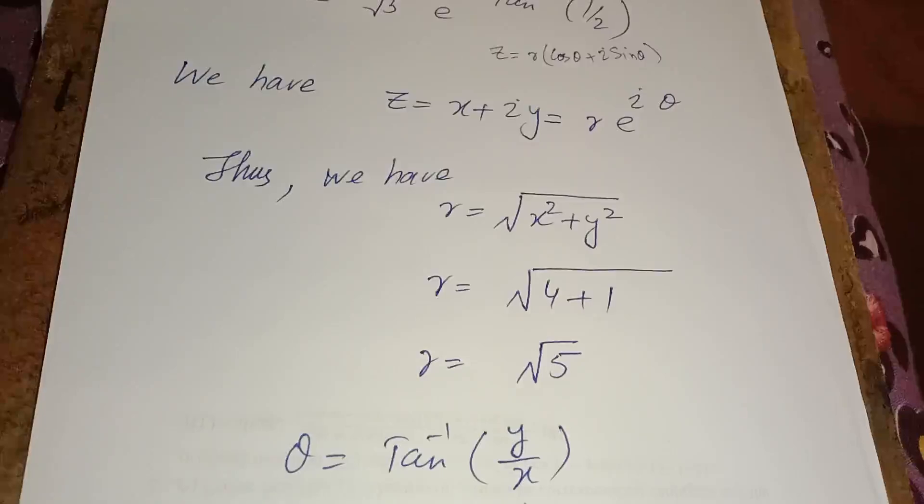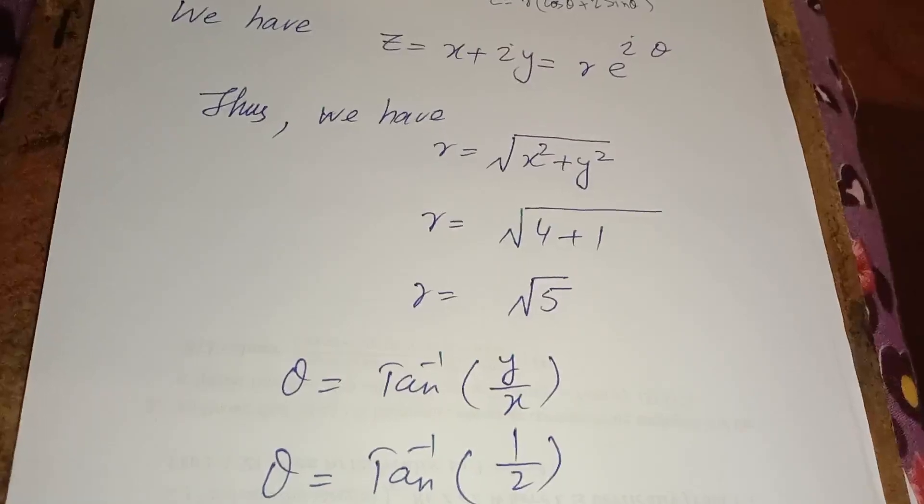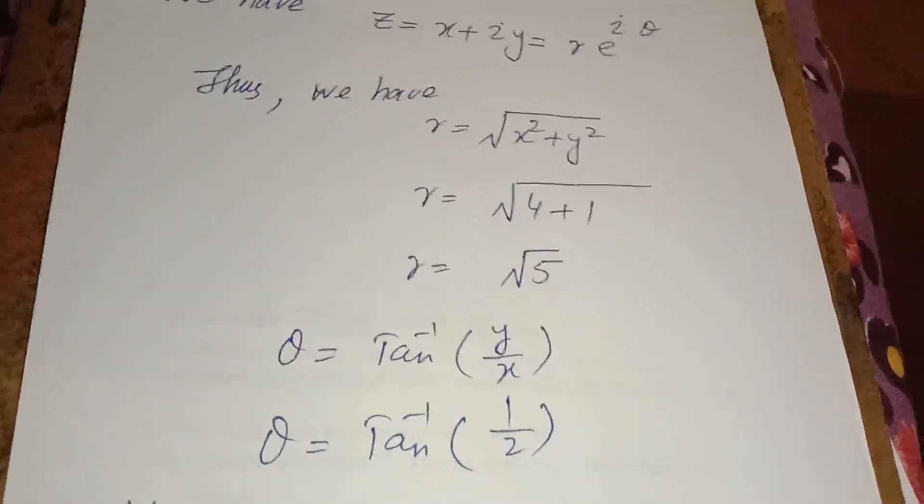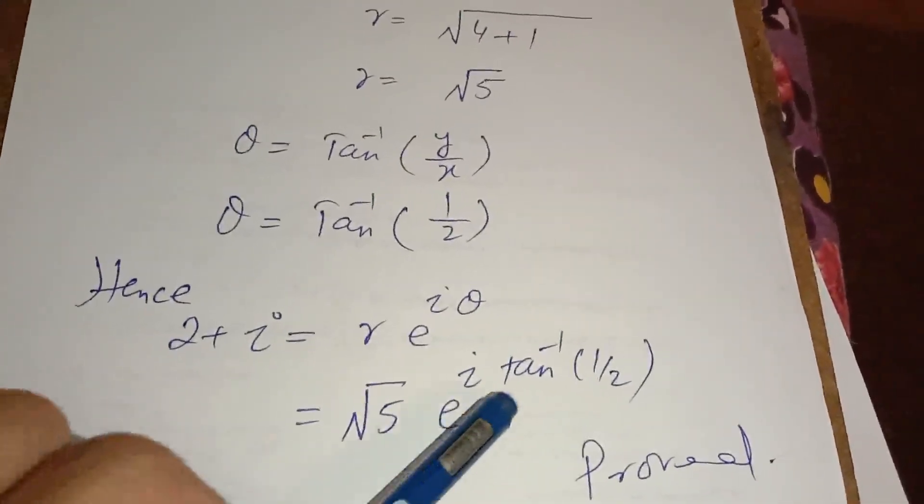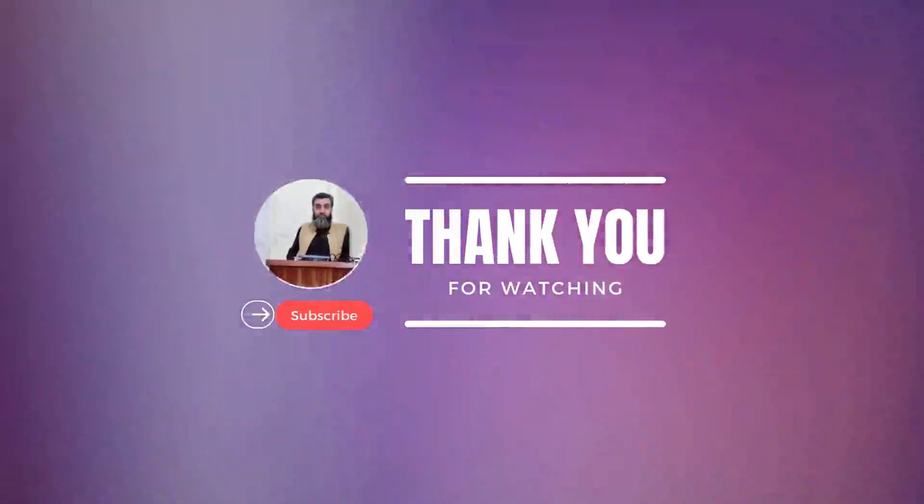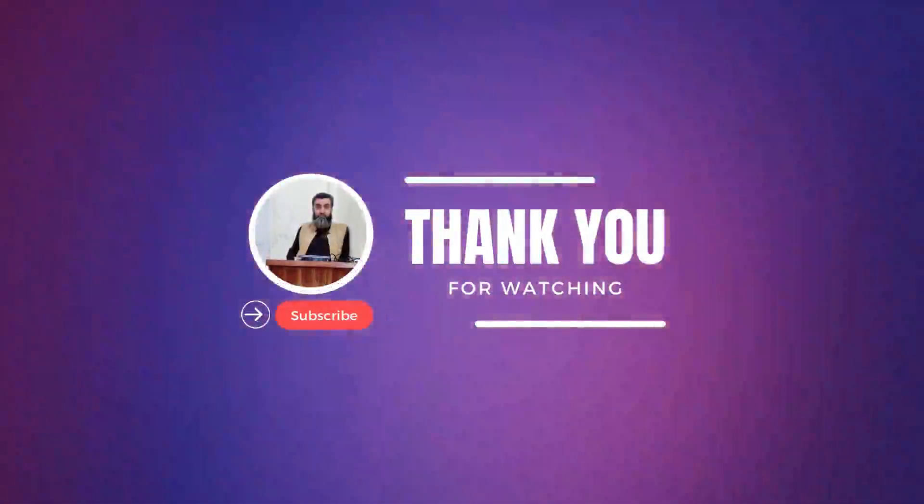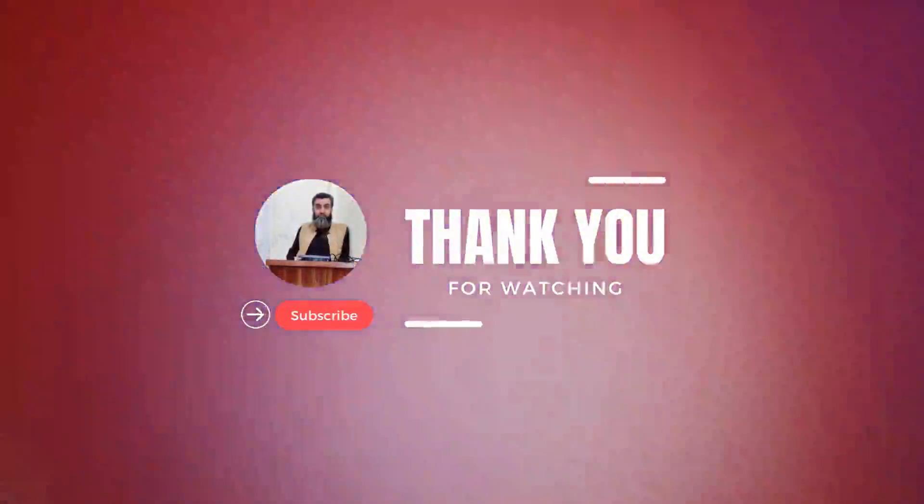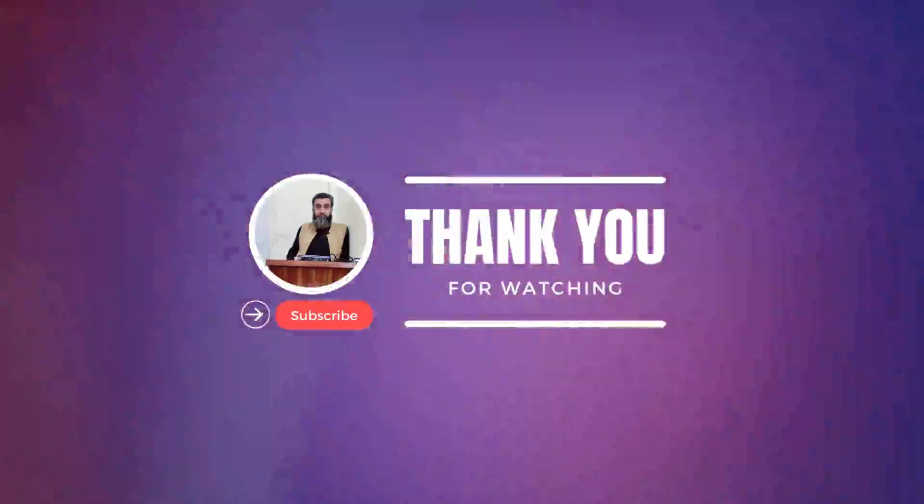Therefore, 2 plus iota is equal to r e power iota theta. r ki value under root 5 hai, or e power iota theta ki value tan inverse of 1 over 2 hai. So we have proved that 2 plus iota is equal to under root 5 e power iota tan inverse of 1 over 2. Thank you.